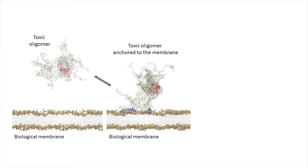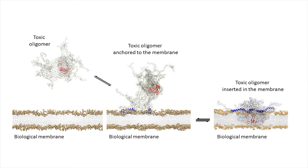Following this interaction, a more structured and voluminous core of the oligomer can insert into the membrane, destroy and destabilize it, and also destroy the functionality of the membrane.